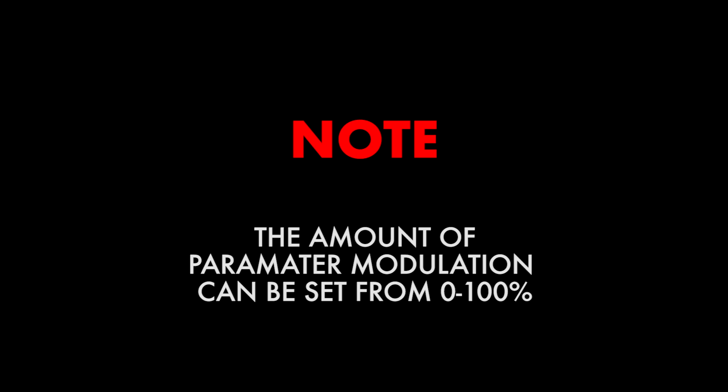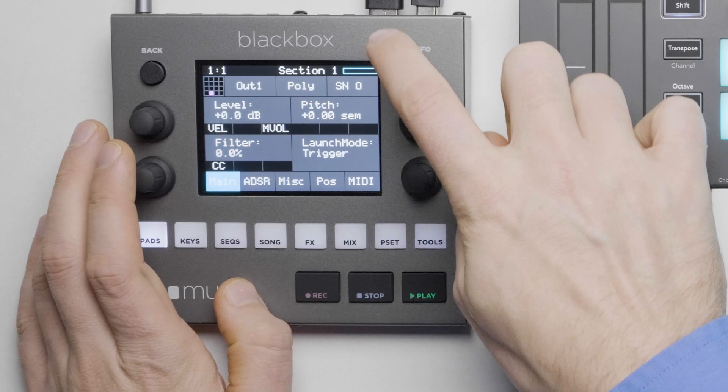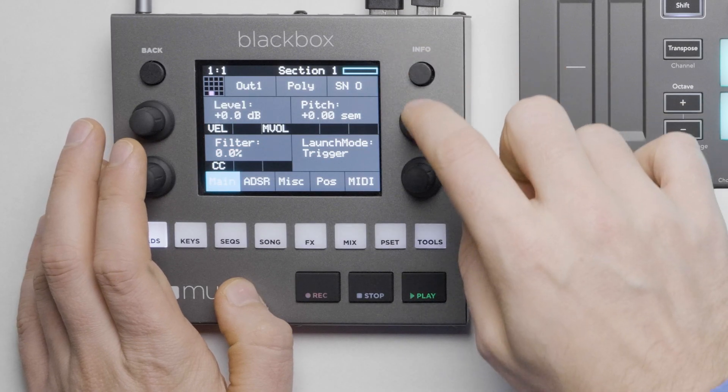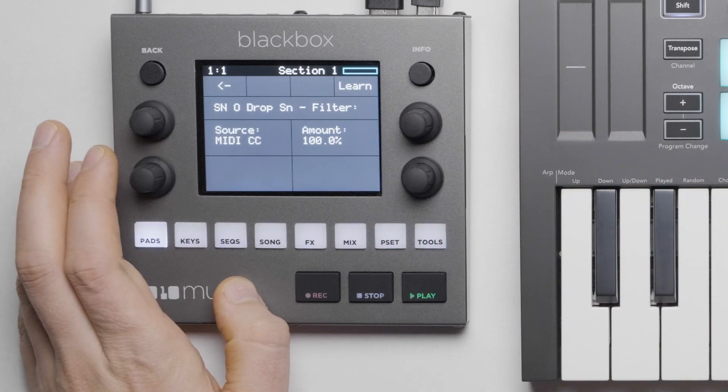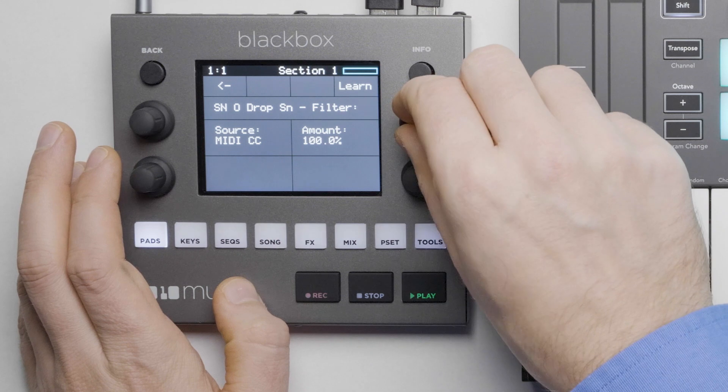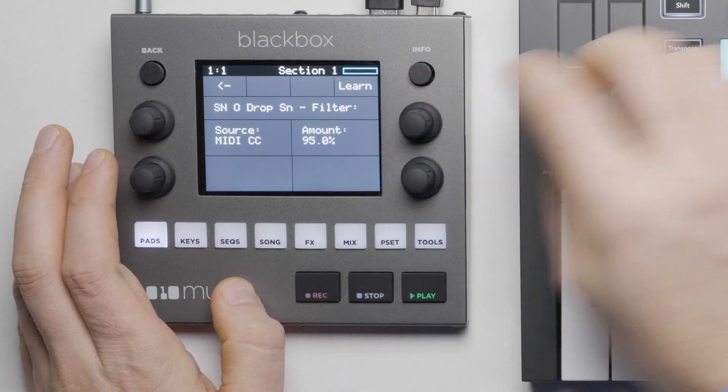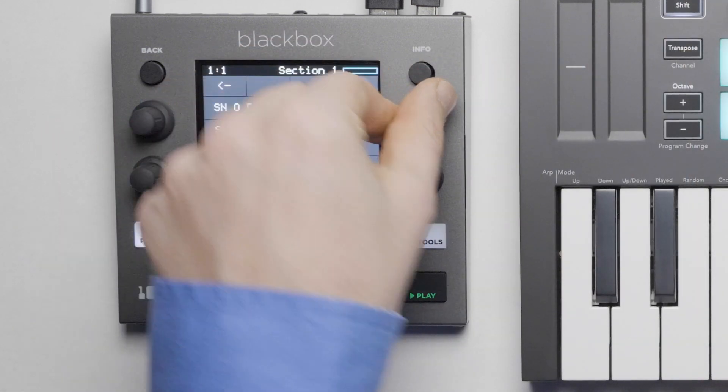Note, when in the modulation source page, we can set the amount of control over the parameter that the MIDI controller can apply. By default, this is set to 100%, but you can limit the amount of control by setting it less than 100%.